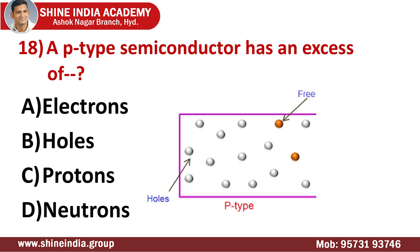Question number eighteen: a p-type semiconductor has an excess of? We have two types of semiconductors, n-type and p-type. The term p-type refers to the positive charge of a hole, as opposite to n-type semiconductors. P-type semiconductors have a larger hole concentration than electron concentration. In n-type semiconductors, electron concentration is more than hole concentration. P is a positive charge coming from holes; N is a negative charge coming from electrons. In p-type semiconductors, holes are the majority carriers and electrons are the minority carriers.